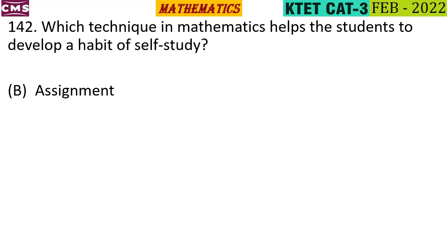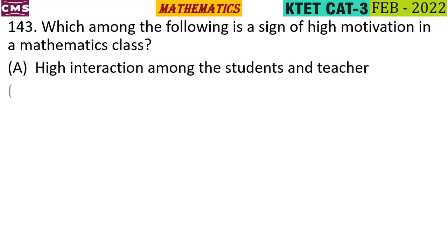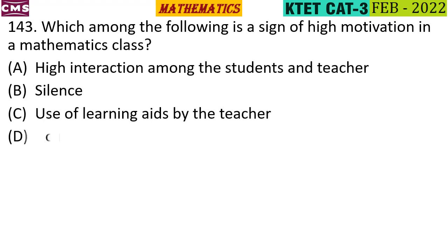Which among the following is a sign of high motivation in a mathematics class? The options are: high interaction among students and teacher, silence, use of learning aids by the teacher, and doing textbook problems. The correct answer is option A — high interaction among students and teacher.